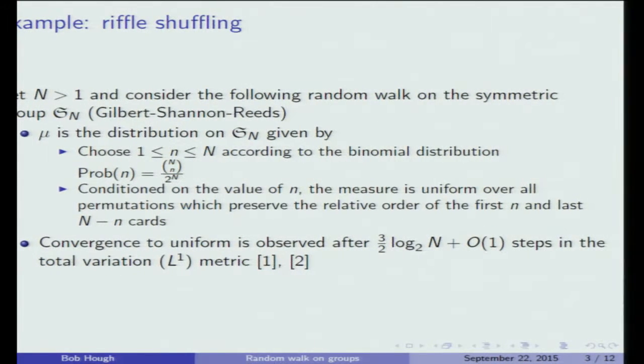This is one of the first models of random walk in a group that was studied, and it was shown by Aldous and then Aldous and Diaconis that this probability measure mixes in three-halves log base 2 of n steps. It's important that it's a common phenomenon in random walk that the measure is uniform for a long period, then it transitions to uniform in a short period of time. The O of 1 is the period of transition, and the log n is the length of time you wait before that happens. That's called the cutoff phenomenon when it occurs.